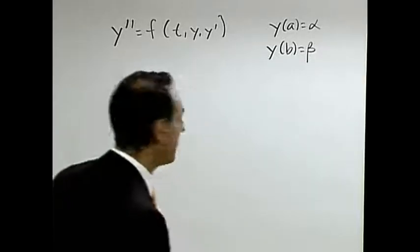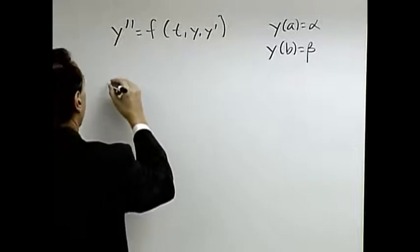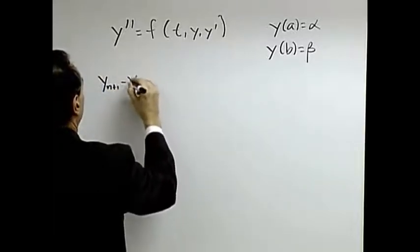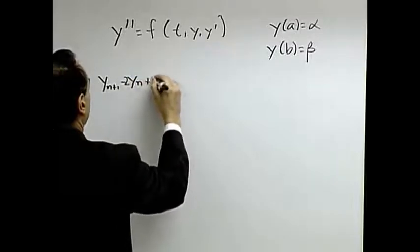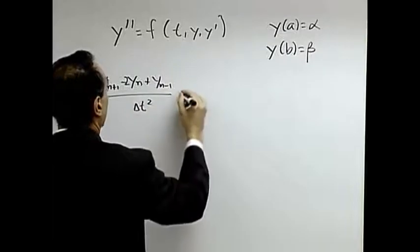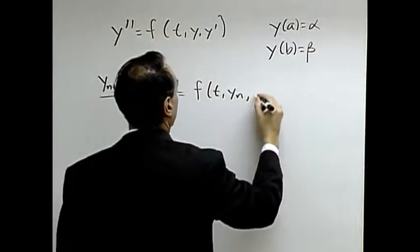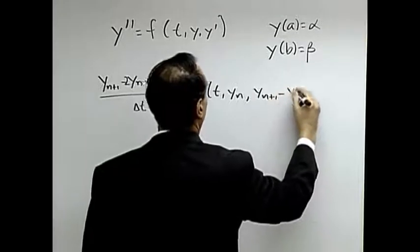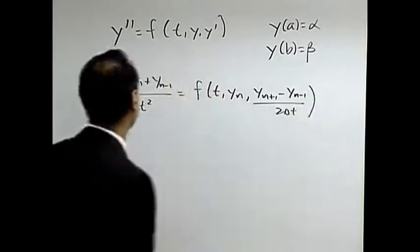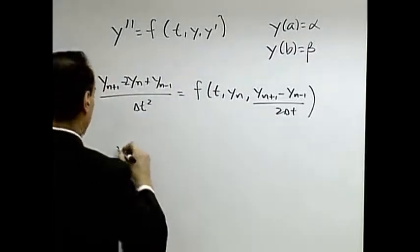So you still do the discretization process. You still would say, okay, let's do the following. This thing here is y of point in front minus twice the current point plus point behind all over delta t squared is equal to f(t, y_n, y_(n+1) minus y_(n-1) over 2 delta t), and I have this. And if I multiply by delta t squared.